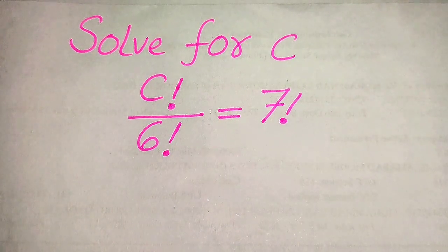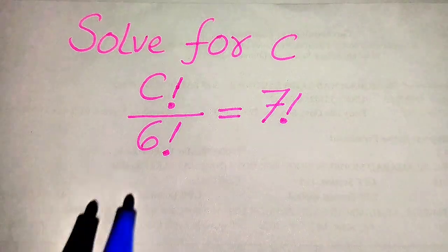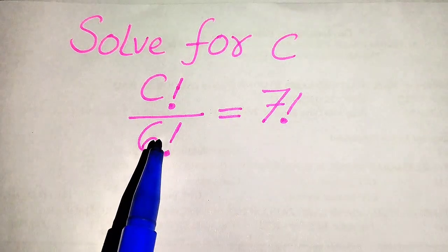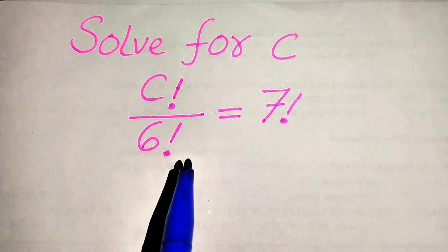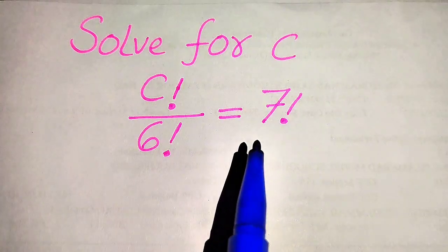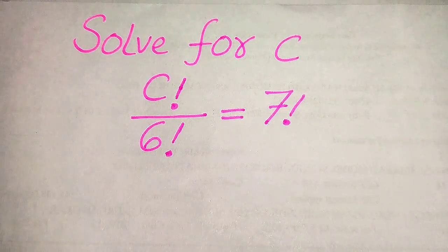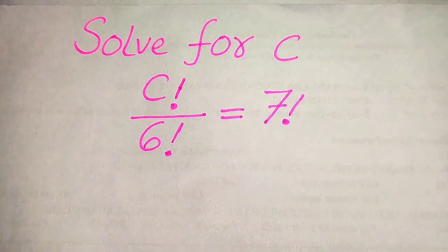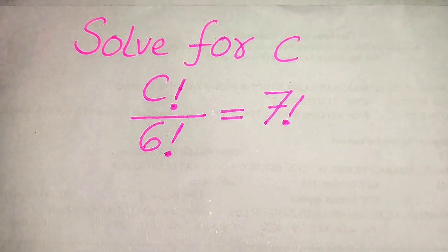Hello everyone. How to solve this problem for the values of c: if we have c factorial divided by 6 factorial equals 7 factorial, we solve this problem for the values of c. I hope you like this method, but if you have any other method in mind, please don't hesitate to write it in the comment section.